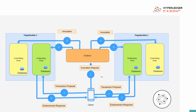It's the client's responsibility to check if it gets sufficient endorsement as per the endorsement policy defined. Let's assume we have three organizations, each having one endorsing peer, and as per the chaincode, we have defined the endorsement policy that we should get at least two endorsements out of three. In that case, the client checks if it gets sufficient endorsements. If it gets two endorsements and they are similar, then the client can send that invocation to the orderer.